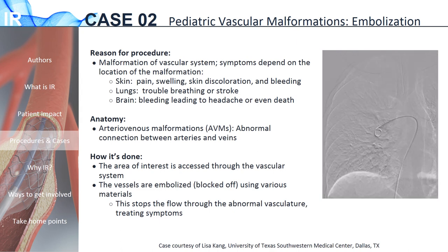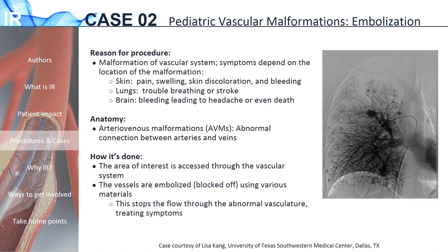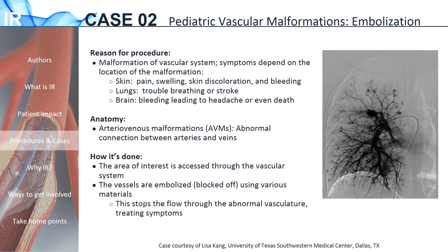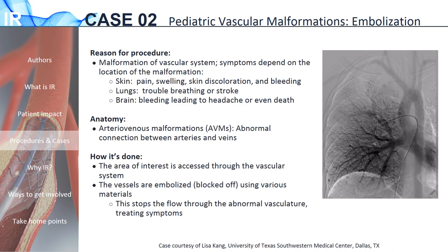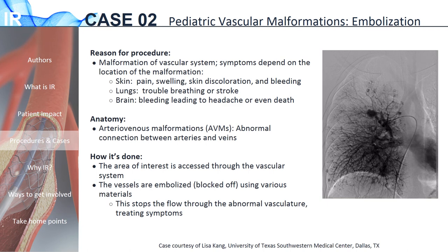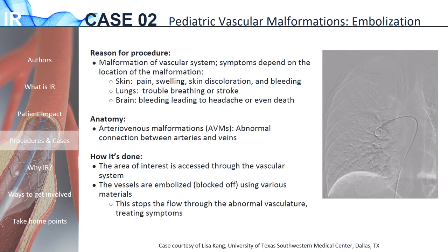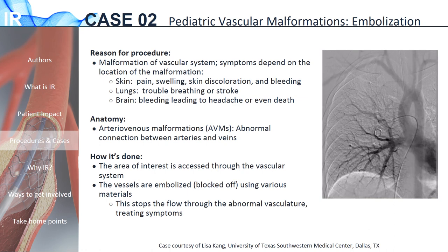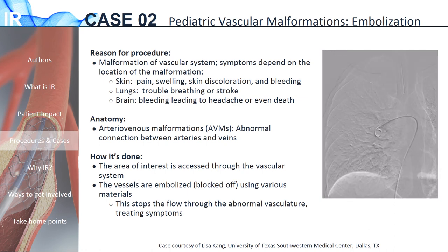How are AVMs fixed by IR? Like most IR procedures, a needle is used to access a blood vessel in the neck or groin. Then a wire and catheter are guided through this incision to the area of the malformation. The malformation is blocked off or embolized using various materials to stop flow to the malformation, reducing the patient's symptoms.